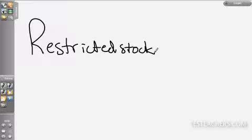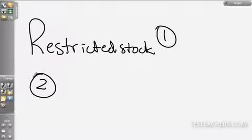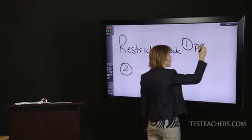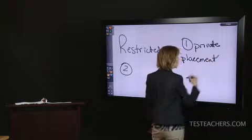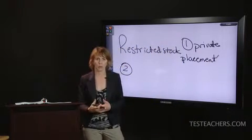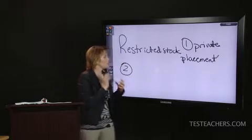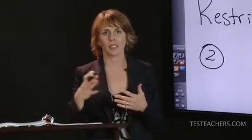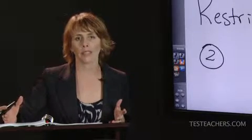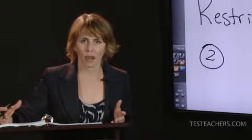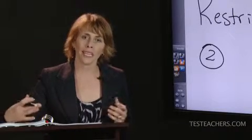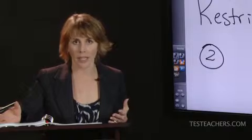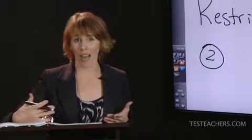One category is a private placement. There are private placement rules at both the federal and state level, which we will learn about in the applicable section. The basics of a private placement: it's the step before a company decides to have an IPO, before they file the registration statement with the SEC and sell shares to the public. It's a way that the company can capitalize but only sells to certain types of investors.